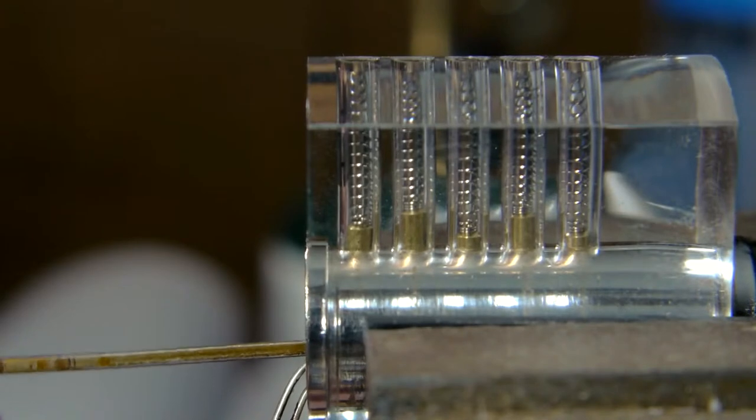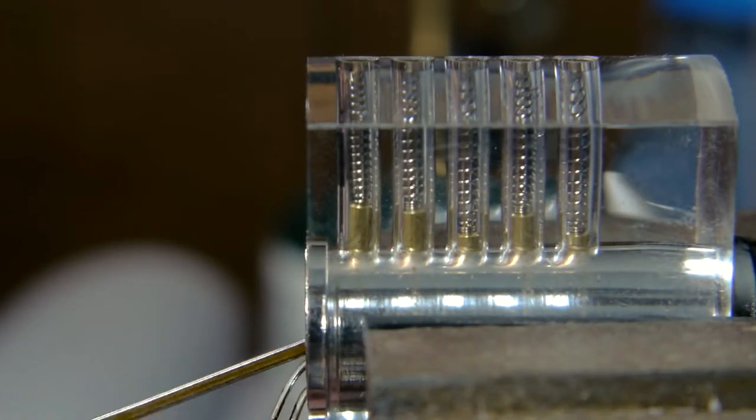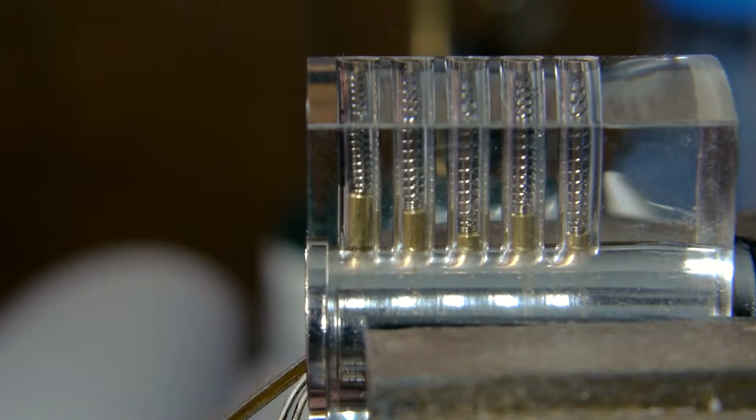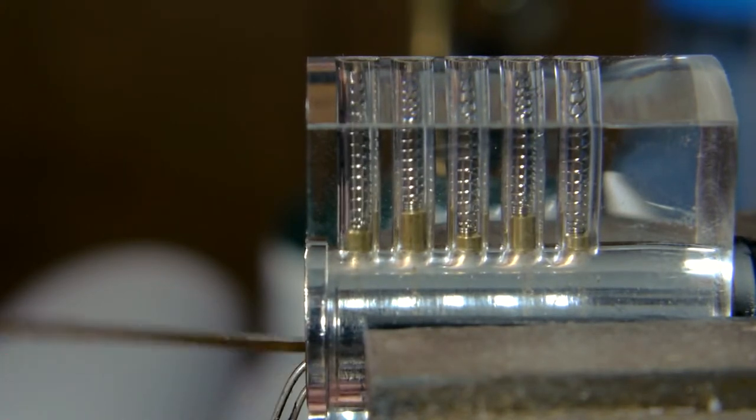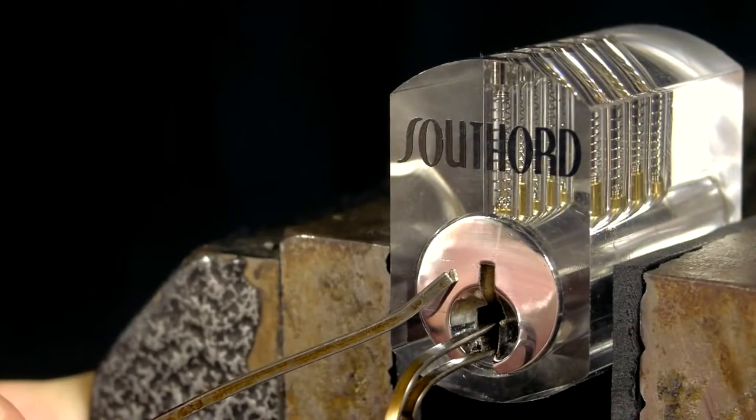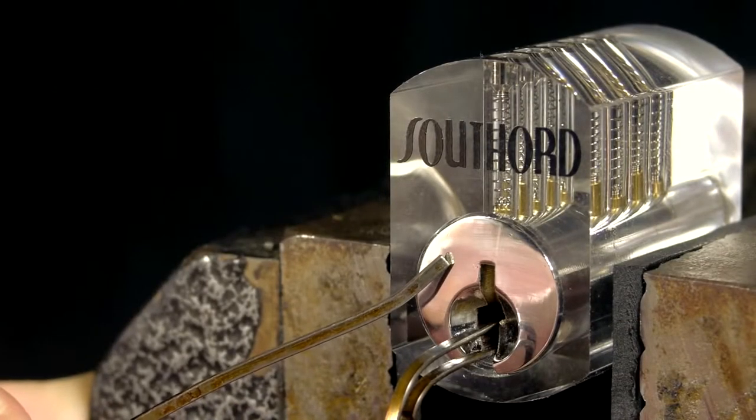Keeping tension on the barrel, the pick is inserted and the first thing to notice is that even though the lock is under pressure, some of the pins still move up and down freely. Because of inherent imperfections in all locks, only one or two pins will ever bind against the barrel at the same time.